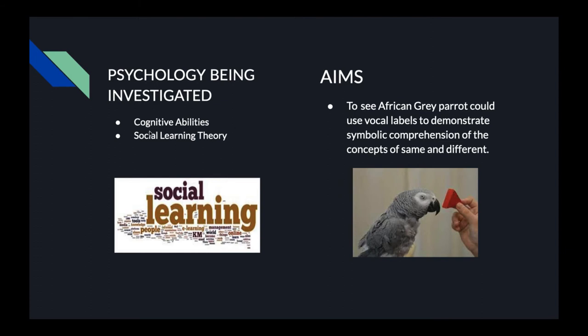How are we looking into that? A reinforcement schedule was created for Alex between the object label and the category that had to be learned. So we are looking into social learning theory as a mechanism for learning. He was exposed to the model rival technique that we will talk about later in this study.